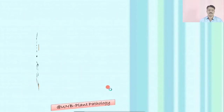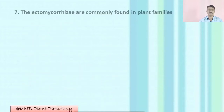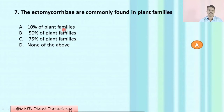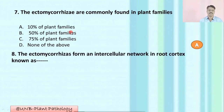Question number seven: Ectomycorrhizae are commonly found in what percentage of plant families? A: 10% of plant families; B: 50% plant families; C: 75% plant families; D: none of the above. The correct option is A: 10% of plant families.